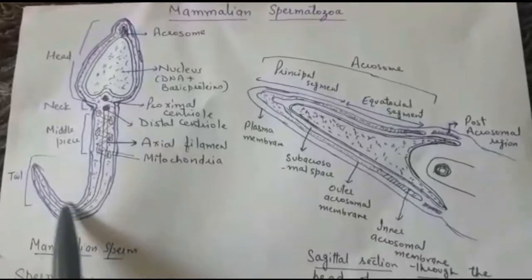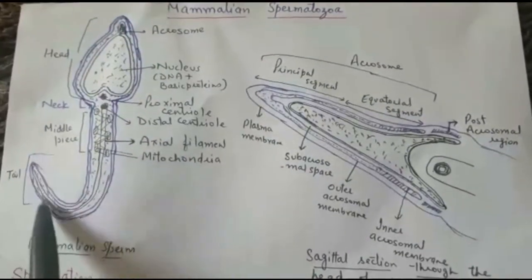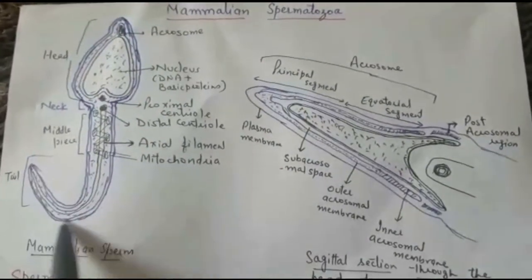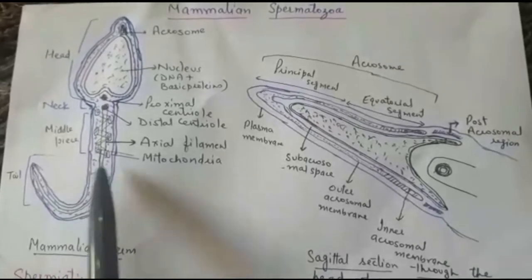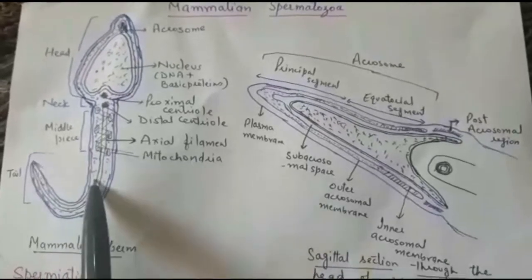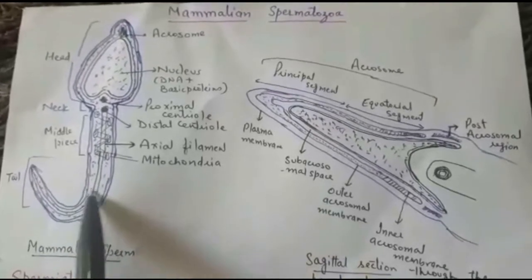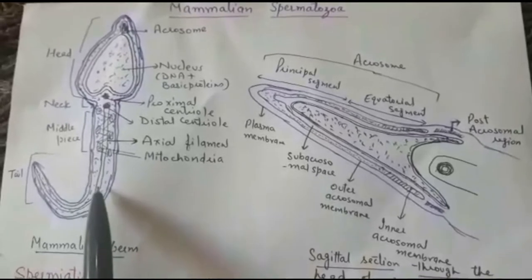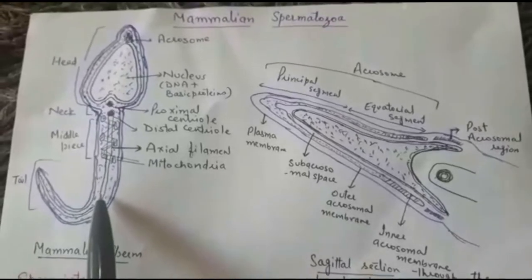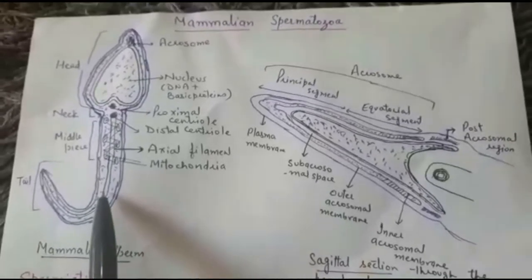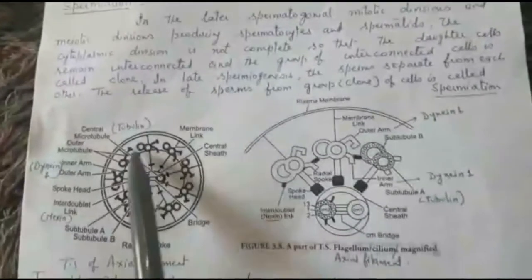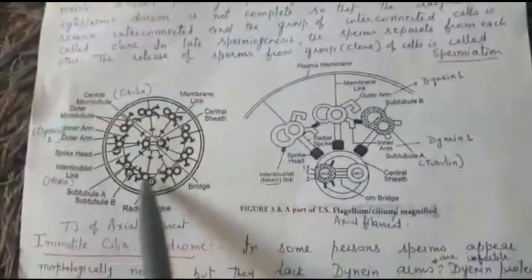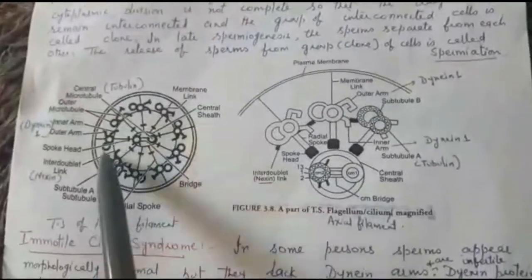The tail mainly comprises the axial filament covered by a thin layer of cytoplasm, covered externally by the plasma membrane. Now we will study the detailed structure of the axial filament.